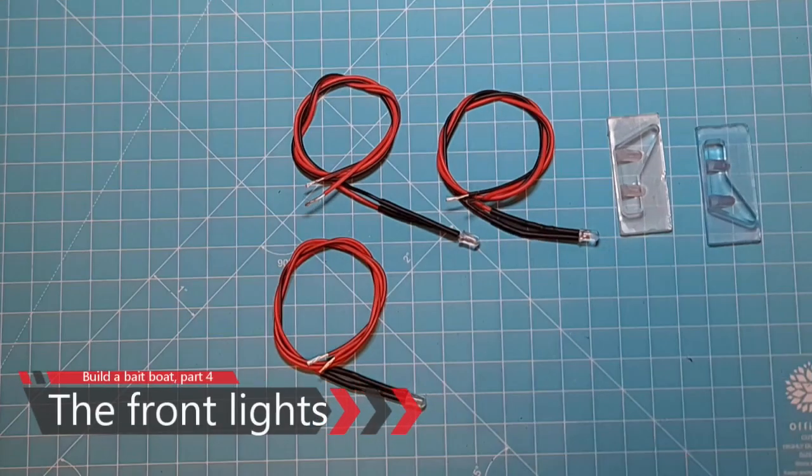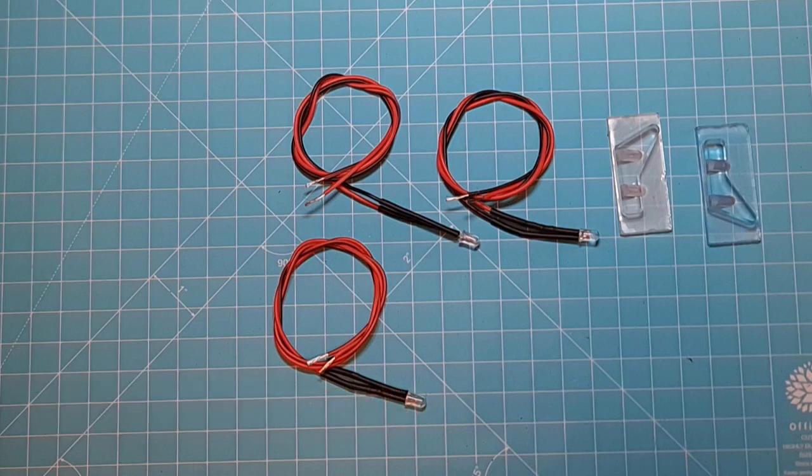First up is the front lights. As I stated before, you might find it far easier to buy ready-made LEDs with the wires. But I personally prefer to build them. So let's just quickly explain how you do that.